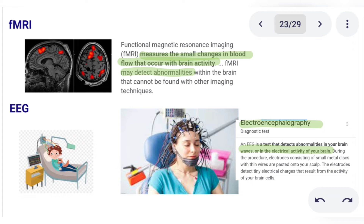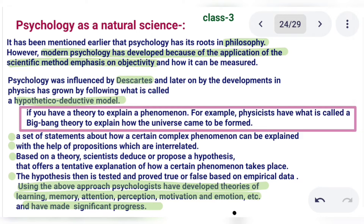We have already studied FMRI and EEG, and now we are going to study psychology as a natural science. It has been mentioned earlier that psychology is related to the roots of philosophy — psychology was originally part of philosophy. However, modern psychology has developed because of the application of the scientific method, with an emphasis on objectivity.